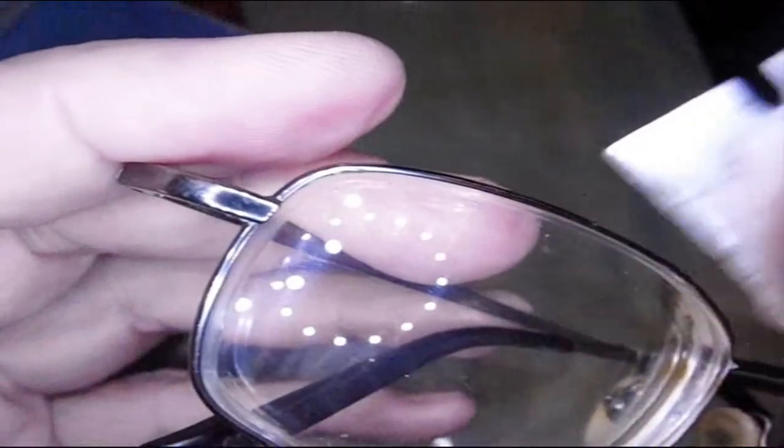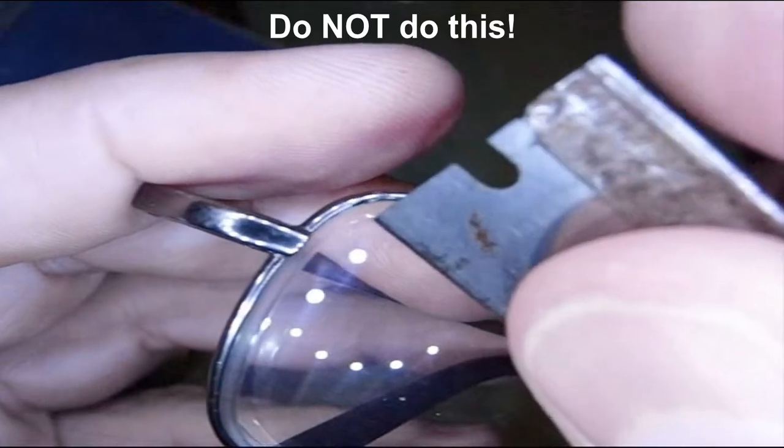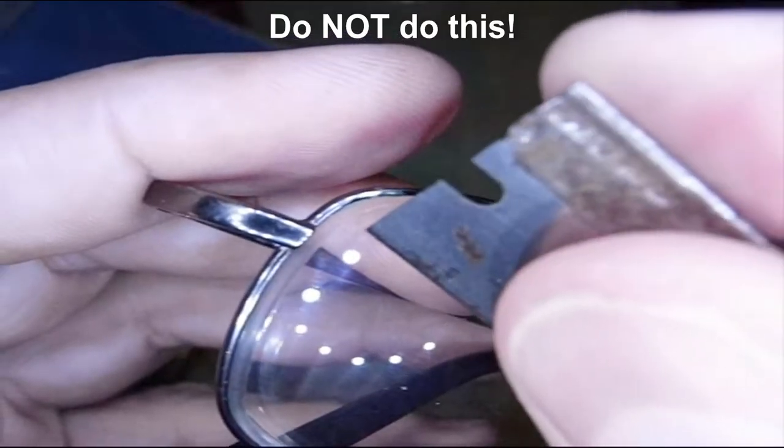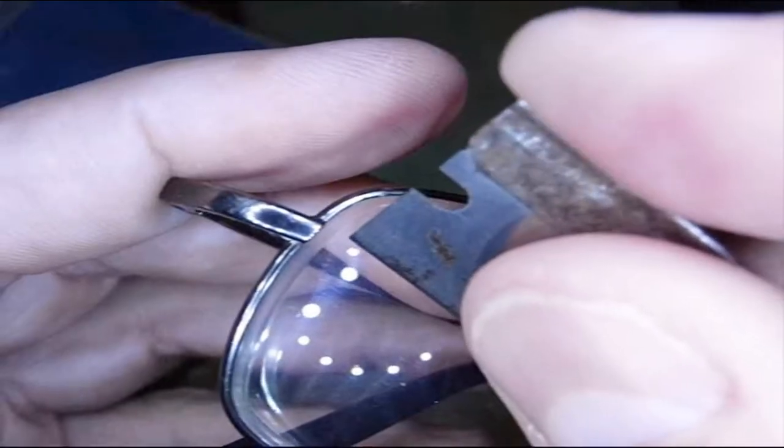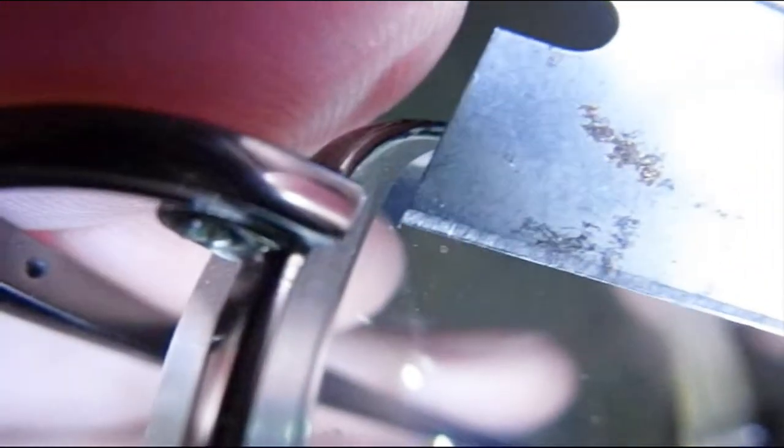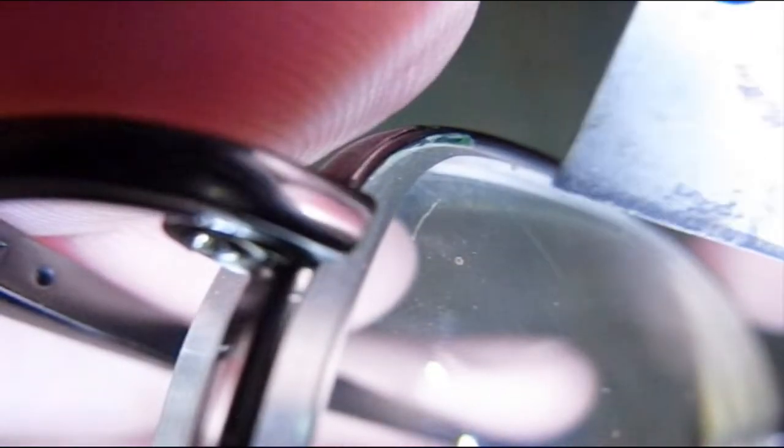I've had some people say you can take a razor blade and lightly scrape on it. Let me show you what happens. These are old glasses. I'll do it off on the edge. See that scratch right there? That's what I just did. Very light touch with a razor blade and I put a beautiful scratch in there. So definitely you don't want to use a razor blade or anything metallic.